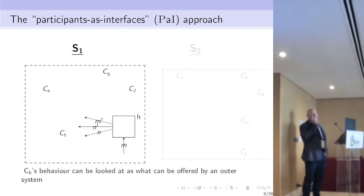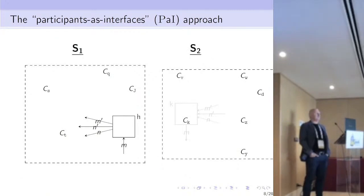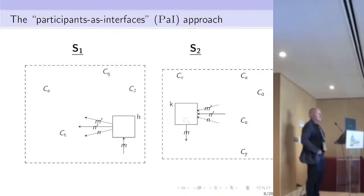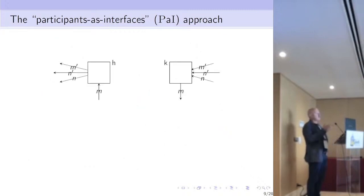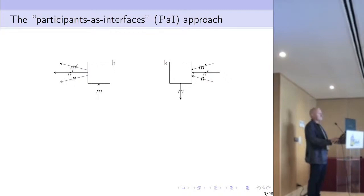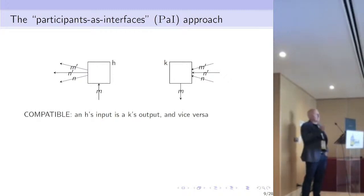We can look at this behavior not as the behavior of that particular component, but as the behavior of another system that offers and accepts some messages. If we wish to compose S1 with another system S2, we might find another participant K in S2 whose behavior is compatible with H. An input of H can be provided by an output of K, and vice versa.